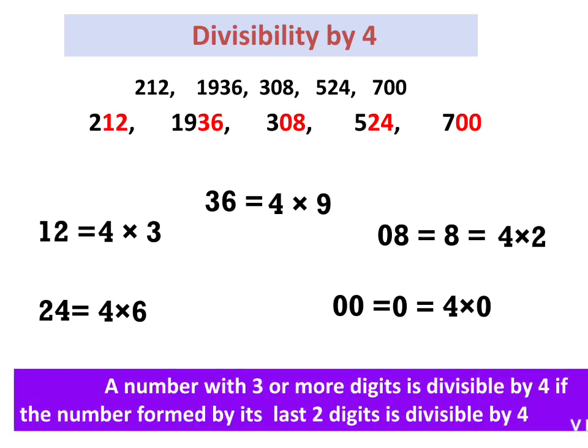A number with 3 or more digits is divisible by 4 if the number formed by its last 2 digits is divisible by 4. You just check whether the last 2 digits are a multiple of 4. If it is a multiple of 4, that number is divisible by 4.